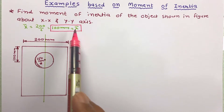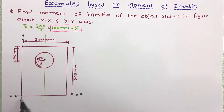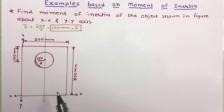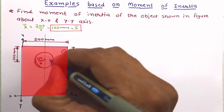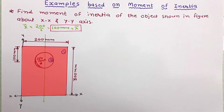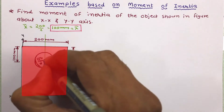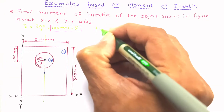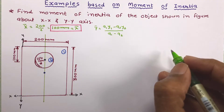Now we have to work out y-bar. First, let us decide the reference axes xx and yy, selected so that the figure remains in the first quadrant. Now let us divide the figure into simple geometric figures. Figure 1 is the rectangle and figure 2 is the circle. Let us mark the centroid of each. We will now use the standard equation of y-bar, working out a1, y1, a2, and y2.